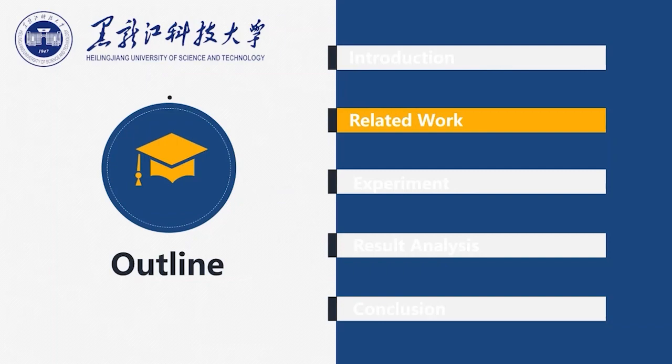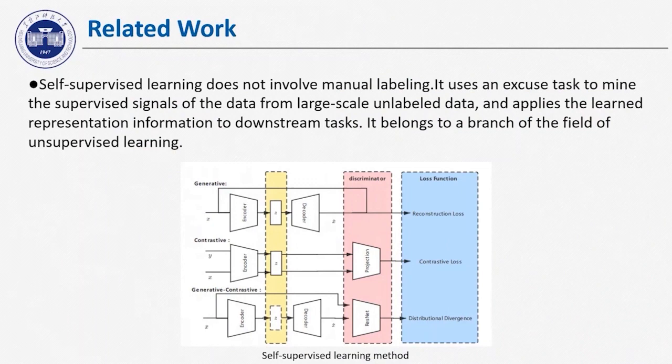I will introduce the main reference technology of the research and the implementation details of the ZL method. Self-supervised learning does not involve manual labeling. It uses pretext tasks to mine supervised signals from large-scale unlabeled data and applies the learned representation to downstream tasks. At present, self-supervised learning methods are mainly divided into three types: generative, contrastive, and generative-contrastive.